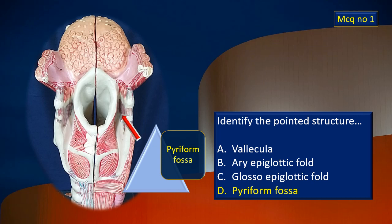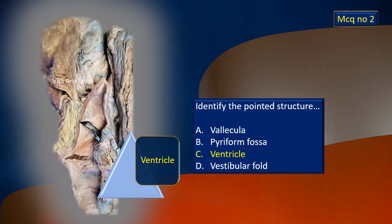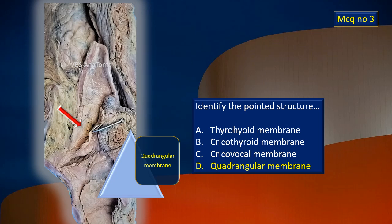MCQ number one: that was the pyriform fossa. Remember, it is immediately lateral to the aryepiglottic fold of mucosa, and more laterally it is bordered by the posterior border of the thyroid cartilage and the thyrohyoid membrane. MCQ number two: that gap between the vocal and the vestibular fold is the ventricle. MCQ number three: the pointed structure is the quadrangular membrane. Our location is above the vestibular fold, above the ventricle; a small flap of mucous membrane has been reflected and the red arrow is pointing to the quadrangular membrane deep to it.